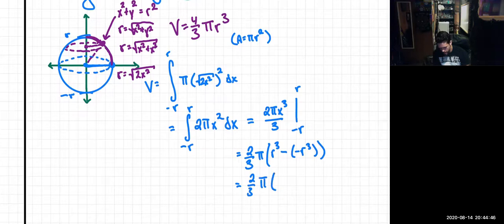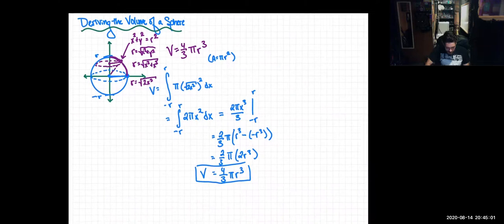Well, that just becomes 2/3 pi times 2 r cubed. And unsurprisingly, this just gives us 4/3 pi r cubed as the volume of a sphere.